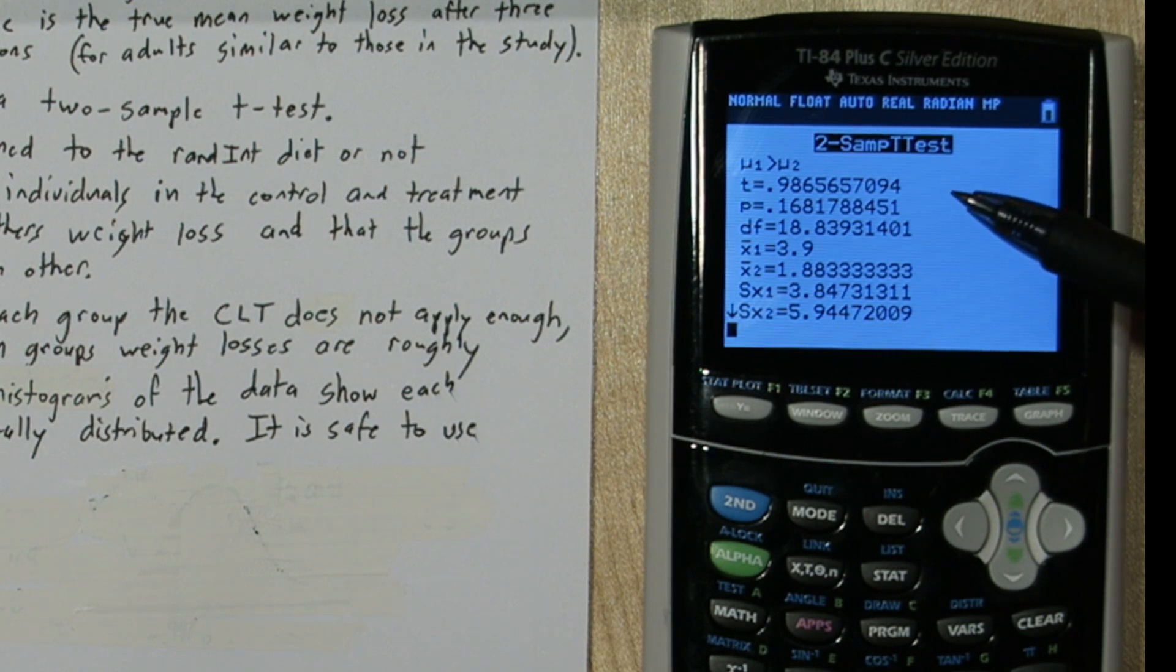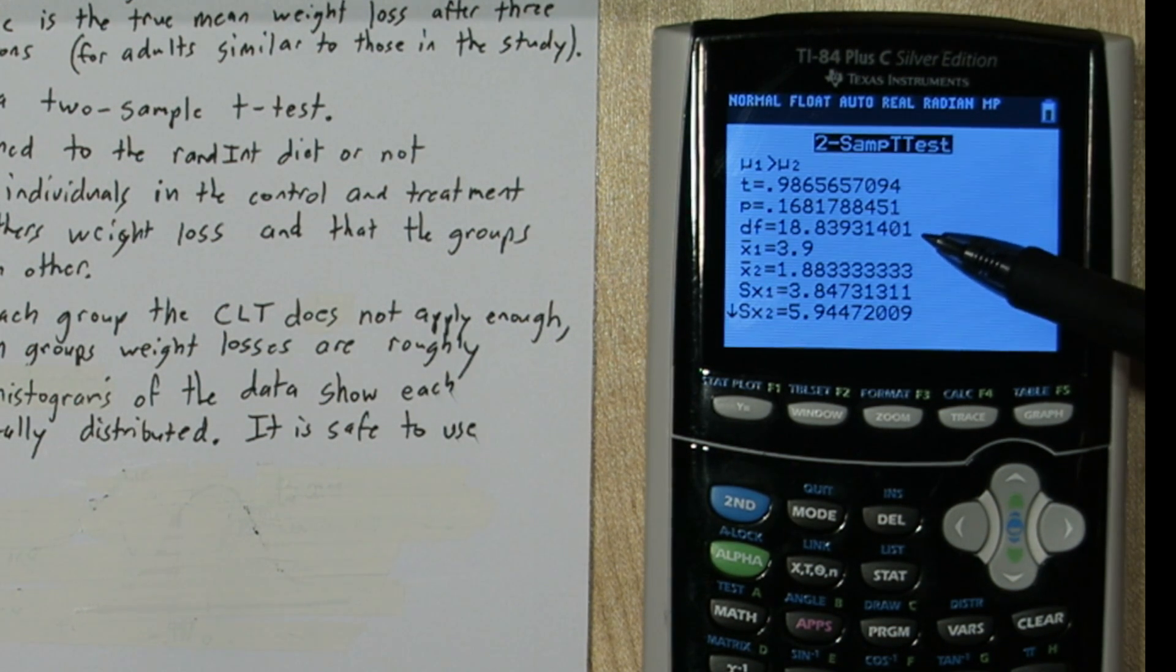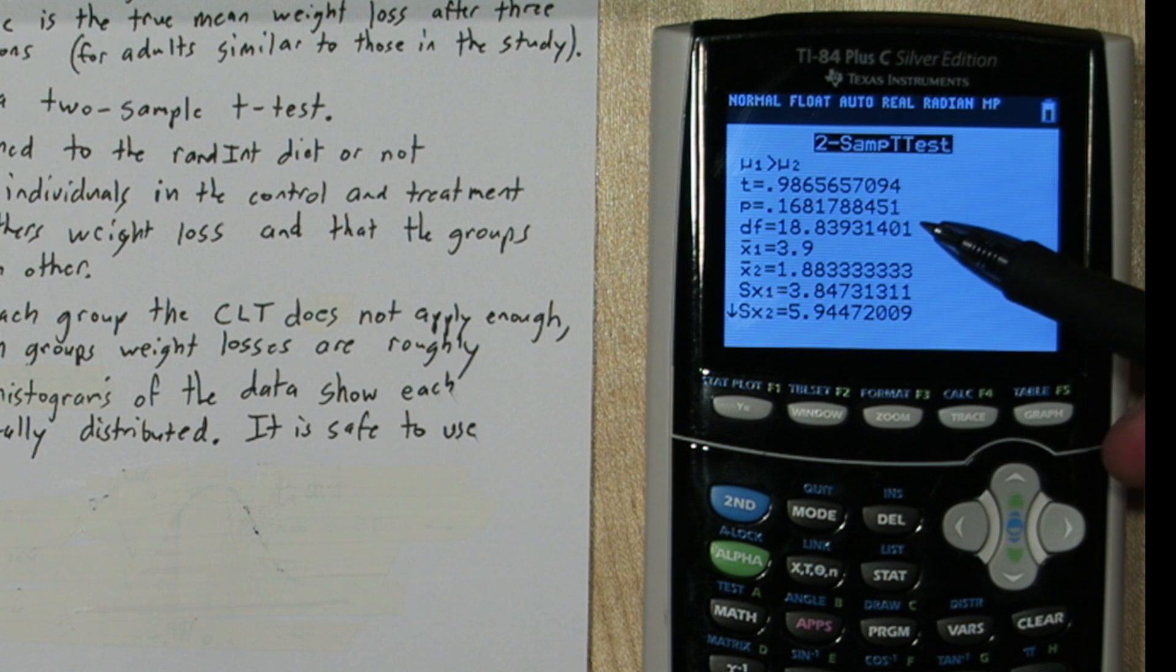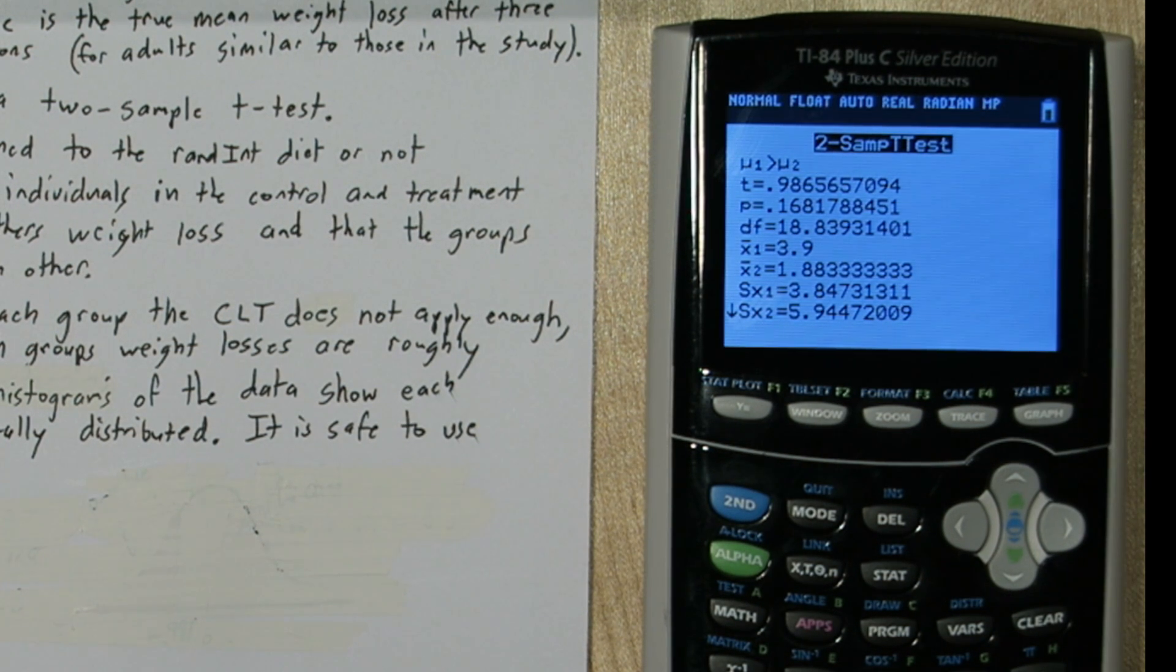Alright here's our test statistic and our p-value, as well as our degrees of freedom. Now if we had done this problem by hand, we would have only had 11 degrees of freedom, our smallest sample size minus 1. But the calculator uses a formula to get a higher degrees of freedom, and that ends up giving us a lower p-value, so that's a good thing. Let's write down all of this information.